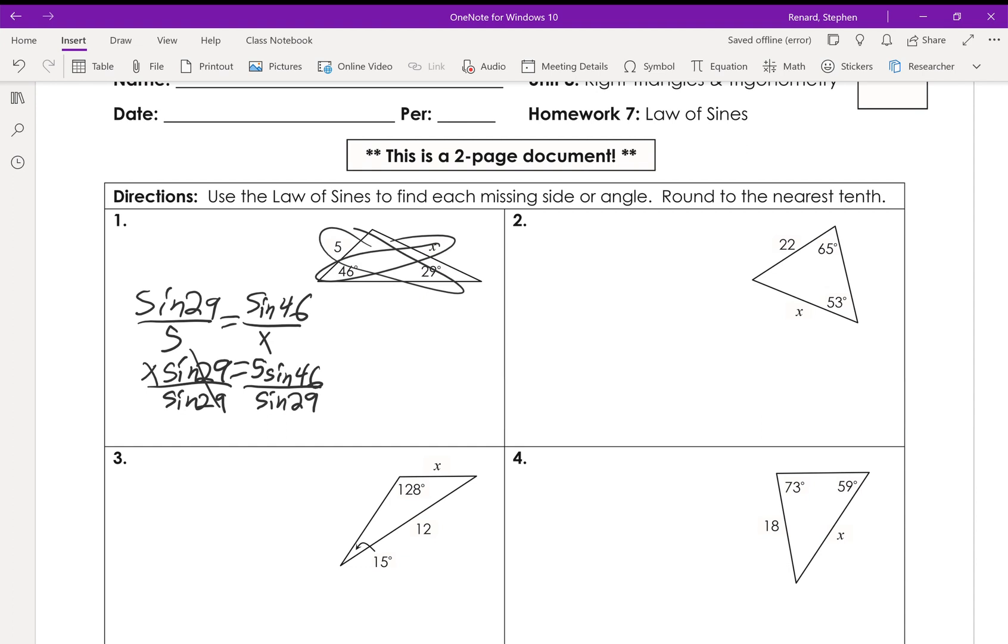From here, grab our handy-dandy calculator, and we're going to go 5 times the sine of 46 divided by the sine of 29. And that's going to equal 7.4.